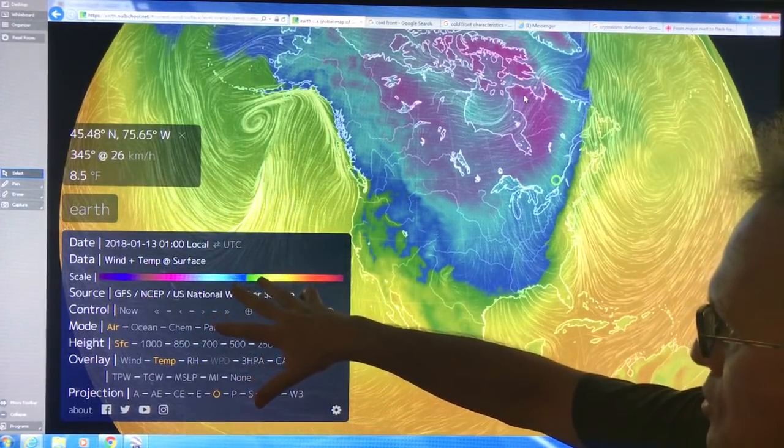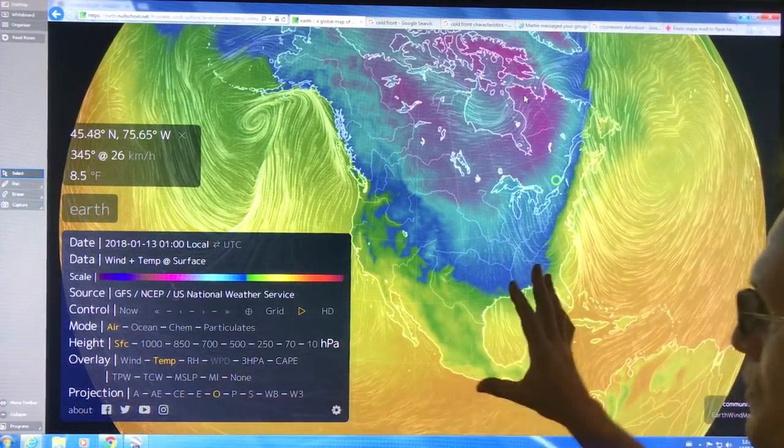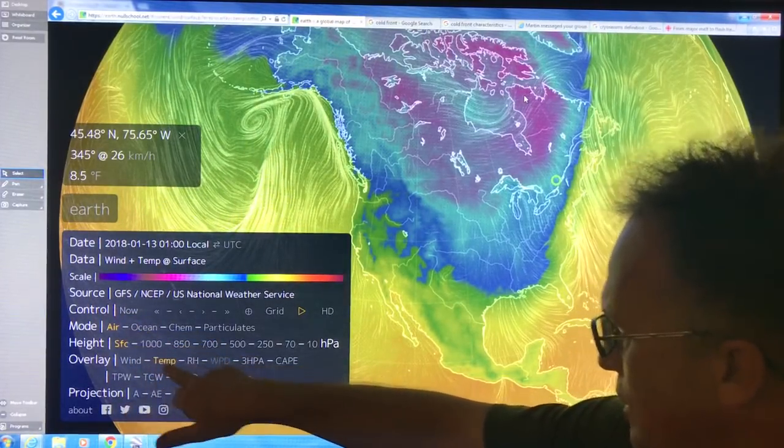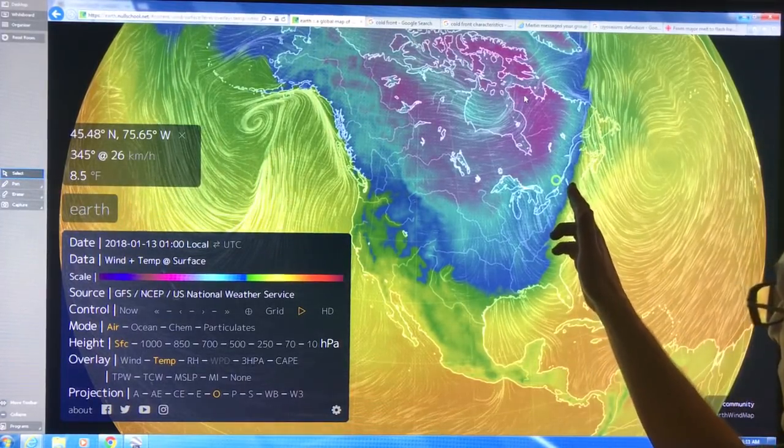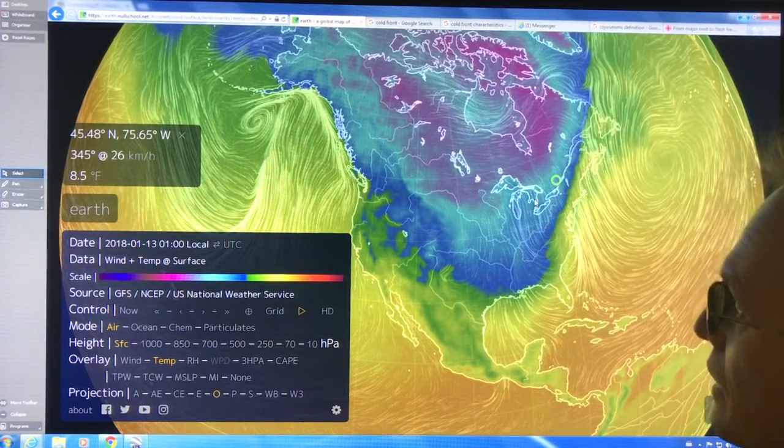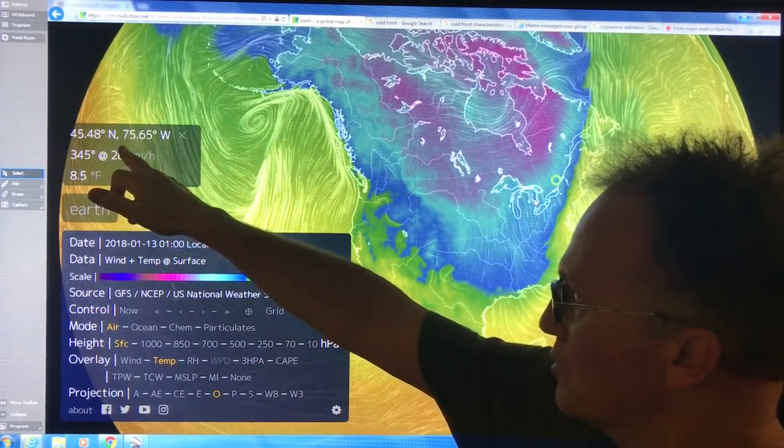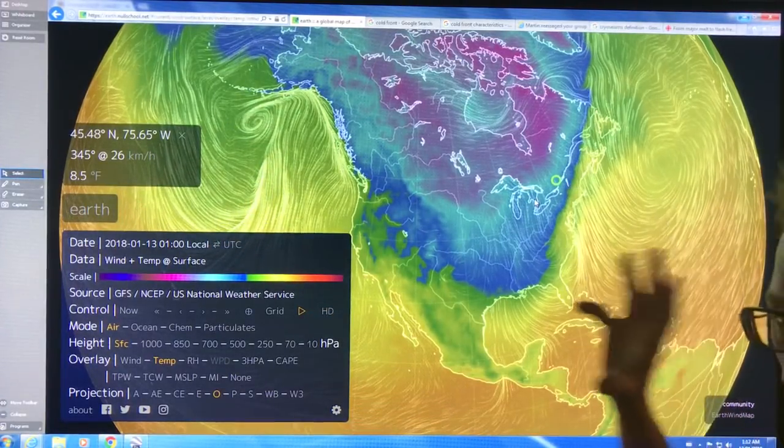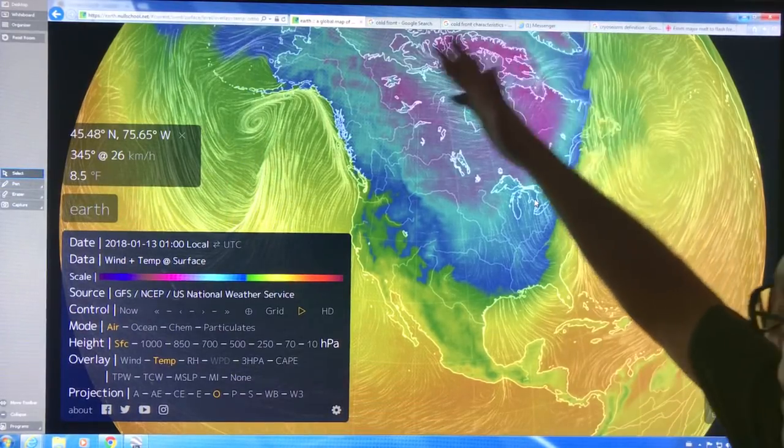Then go to earth.nullschool.net. Click on earth, brings up the menu, shows you what we're looking at. We're looking at air at the surface and the temperature in this case. I selected temperature, it shows the temperature right now. What I did is I clicked on the map and you can move this around just by clicking until I got to about 45 and a half degrees north, 75 and two-thirds degrees west.